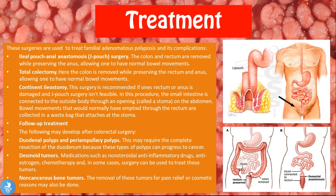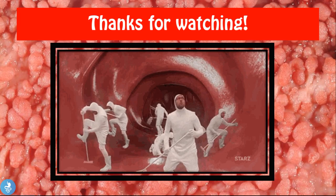Follow-up treatment after colorectal surgery may be needed for duodenal and periampullary polyps, which may require complete resection of the duodenum as they can progress to cancer. Desmoid tumors can be treated with NSAIDs, anti-estrogens, chemotherapy, or surgery. Non-cancerous bone tumors such as osteomas may also be removed for pain relief or cosmetic reasons.